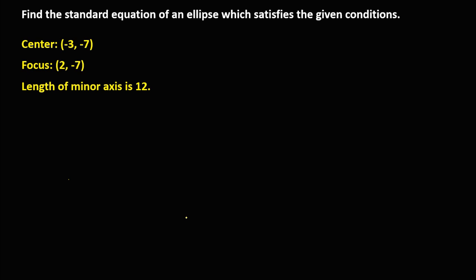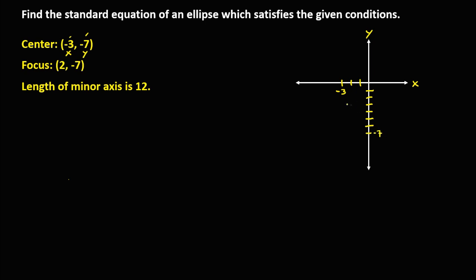First, we need to graph this ellipse on a Cartesian plane. From the given, the center has x equal to negative 3 and y equal to negative 7. So we plot negative 3 on x and count down to negative 7 on y. This gives us the coordinate of the center.